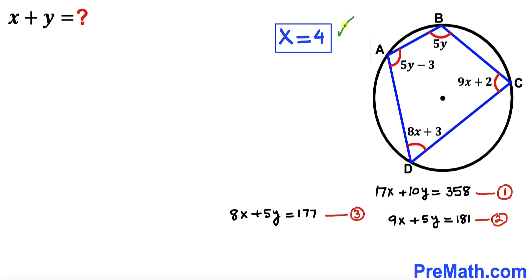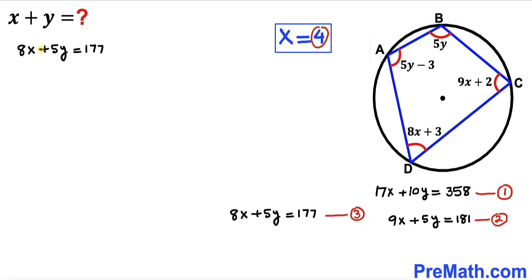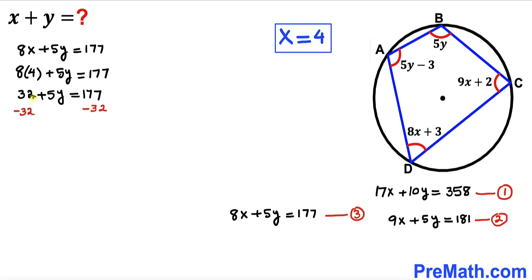With x equals 4, we now find y using Equation 3: 8x plus 5y equals 177. Substituting x equals 4: 8 times 4 plus 5y equals 177, which gives 32 plus 5y equals 177. Subtracting 32 from both sides: 5y equals 145. Dividing both sides by 5, y equals 29.